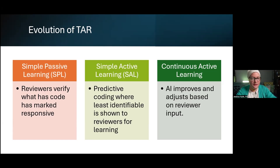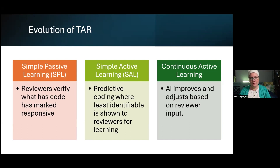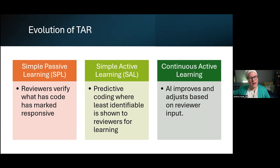The current method used is continuous active learning, where the artificial intelligence adjusts based on reviewer input. Rather than always feeding reviewers some non-responsive content to eliminate unimportant items as in simple active learning, it continually refines itself to figure out what is important.